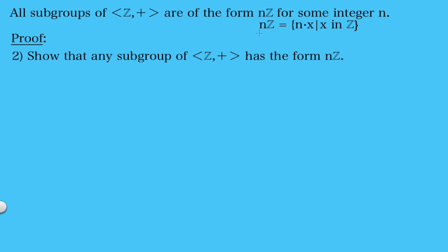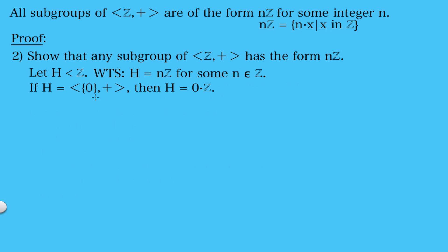Now that we've shown that this is in fact a subgroup, we need to show that this is the only type of subgroup we can have. So we need to show that any subgroup of the integers with addition has to have this form — the integer multiples of n for some integer n. Let's start by taking an arbitrary subgroup, we'll call this subgroup H, and we want to show that H must equal n times the set of integers. First we can consider when H is the trivial group — then H is really just equal to 0 times the set of integers, so if H is the trivial group, we can write it in this form.